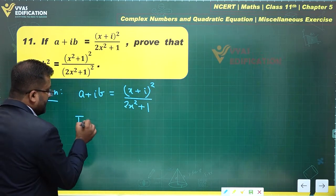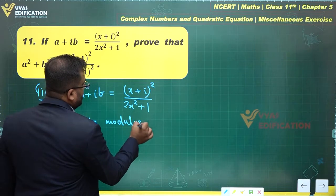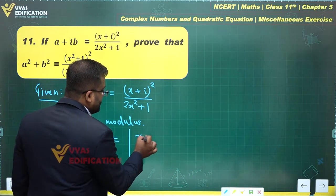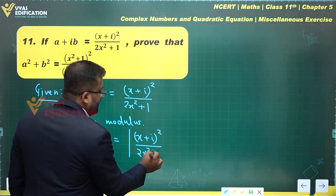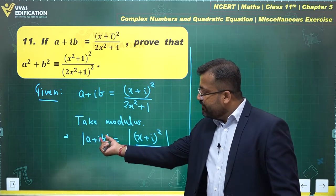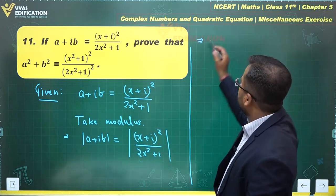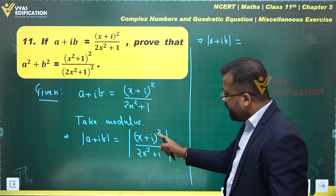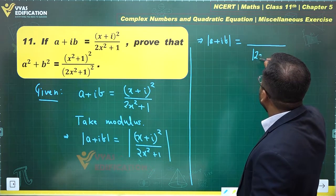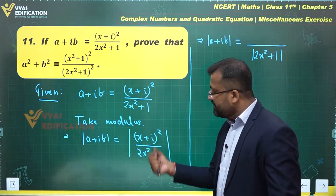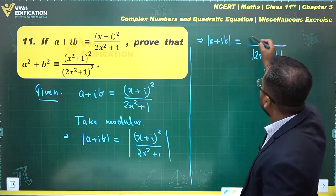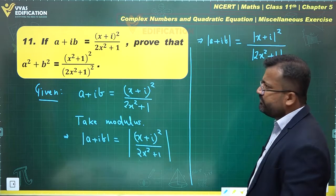Since this complex number is equal to that complex number, we can take modulus on both sides. Modulus implies that the modulus of a plus ib equals the modulus of x plus i whole square over 2x square plus 1. Using properties of modulus — modulus of z1 upon z2 equals mod z1 upon mod z2 — the denominator becomes modulus of 2x square plus 1, and the numerator uses the property that modulus of z square equals modulus of z whole square, giving modulus of x plus i whole square.